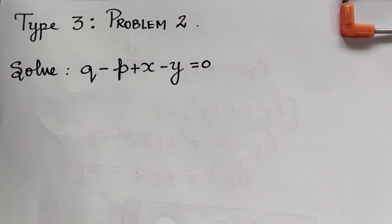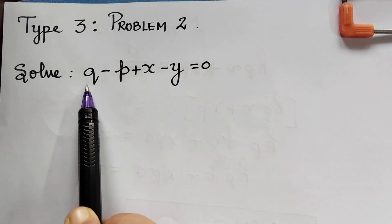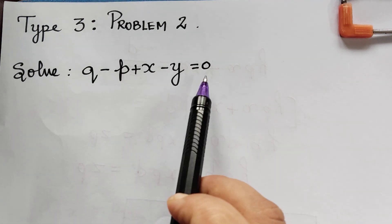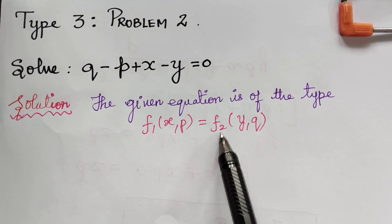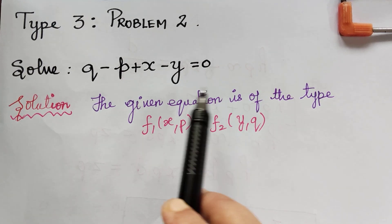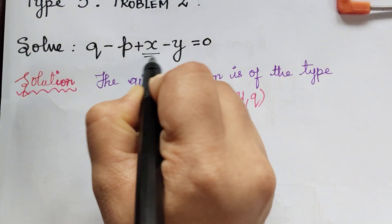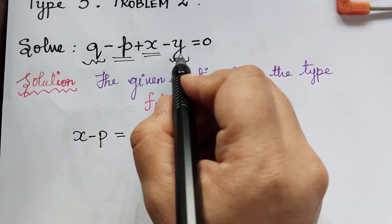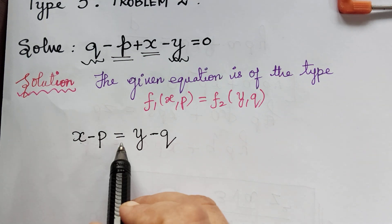We shall solve one more problem on the same topic. Problem 2 is: solve q minus p + x minus y = 0. We observe that only x, y, p, and q are present and z is not present. If z is not present, the equation is of the type f1(x, p) = f2(y, q). We separate variables: retaining x and p on the left and taking y and q to the right, we get x minus p = y minus q.